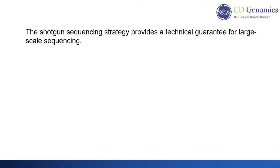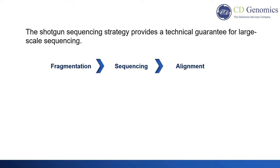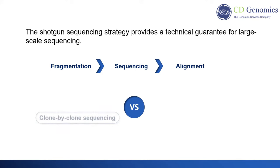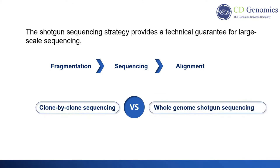The shotgun sequencing strategy provides a technical guarantee for large-scale sequencing. The technology first randomly interrupts a complete target sequence into small fragments, sequences them separately, and then splices them into a consistent sequence by using the overlapping relationships of these small fragments. For large genomes, it mainly includes two methods: hierarchical shotgun sequencing, or the clone-by-clone method, and whole genome shotgun sequencing.